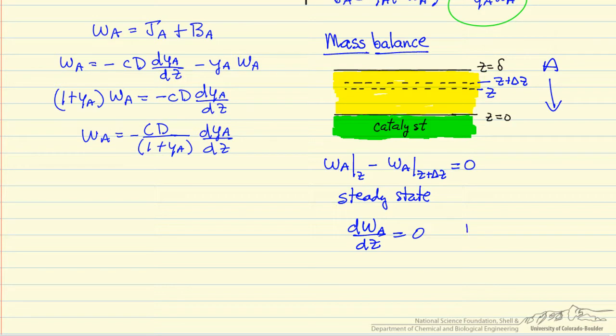The boundary conditions for this system is that at Z equals zero, the concentration of A is essentially zero because the reaction is instantaneous, and at Z equals delta, the concentration is just Ca at delta, the number that we have to know to obtain this profile.